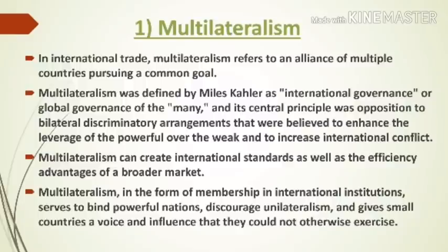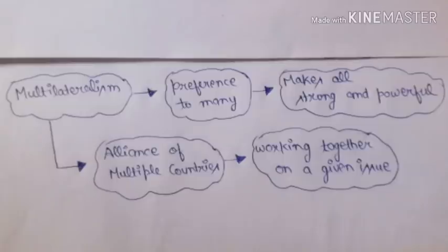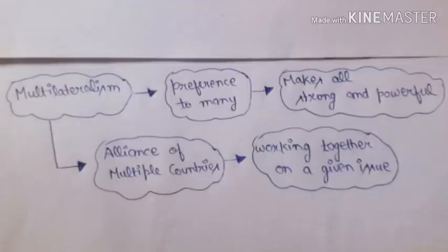So the concept of multilateralism — that was the major and important central principle. Let's look at the diagram now on your screen. What is multilateralism? It is a preference for many, to make all strong and powerful. It is basically an alliance of multiple countries working together on a given issue — a group of many countries.